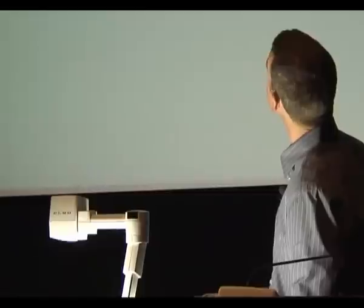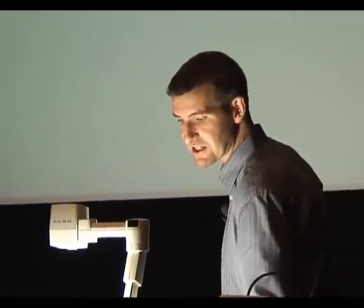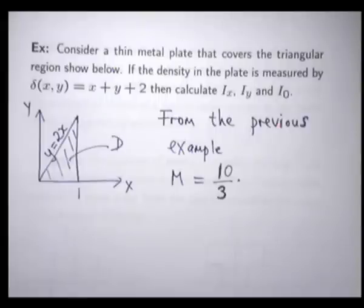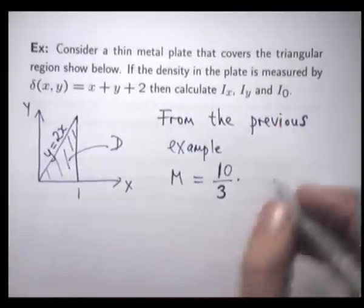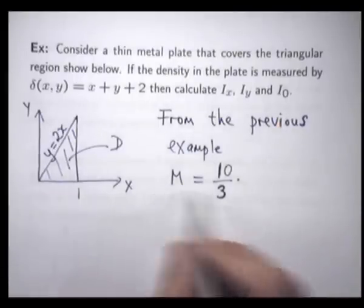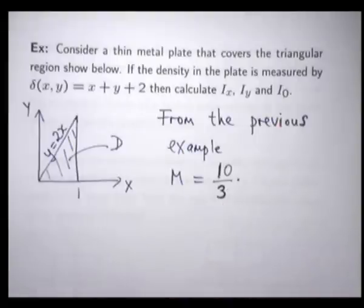Consider a thin metal plate that covers the same triangular region as before. We're asked to calculate the second moments, including the polar moments. Okay, so from the previous example, we calculated the mass, so we don't need to do that again.